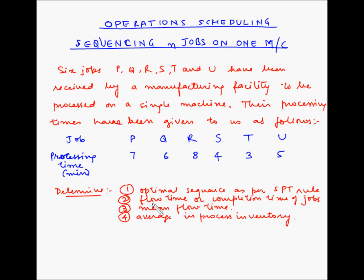We need to determine four things: first, the optimal sequence per the SPT rule; second, the flow time or completion time of the jobs; third, the mean flow time; and fourth, the average in-process inventory.